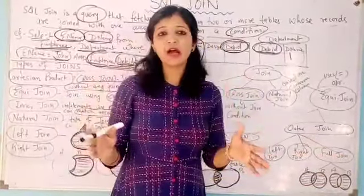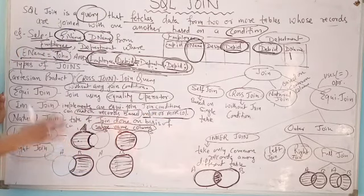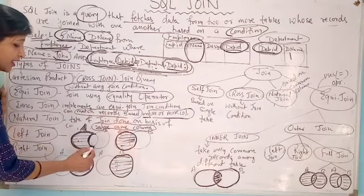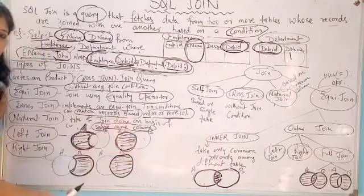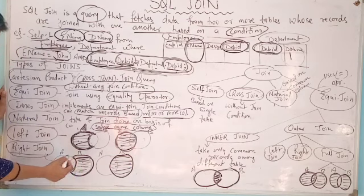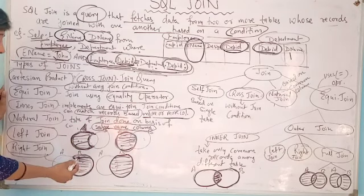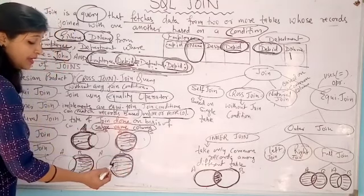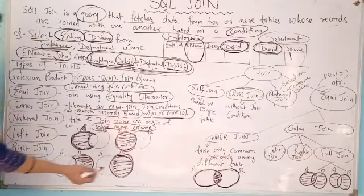In left outer join, when we combine two tables A and B, we want the records of the first table, so it is known as left join. In left join, there are two variations: we may want only the records of the first table, or we may want the records of the first table as well as the common records from both tables. Next is the right join. In right join, we take the records of the second table, and there are two situations again: we need only the records of the second table, or we need all records of the second table including those common among A and B. These are the two variations of left outer join and right outer join.